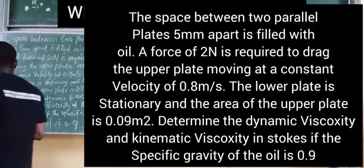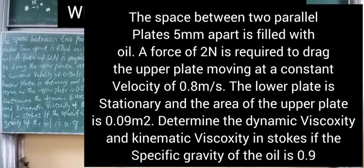The problem says: the space between two parallel plates five millimeters apart is filled with oil. A force of two Newtons is required to drag the upper plate at a constant velocity of 0.8 meters per second. The lower plate is stationary and the area of the upper plate is 0.09 meters squared. Determine the dynamic viscosity and kinematic viscosity of the oil in stokes, if the specific gravity of the oil is 0.9.